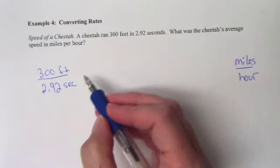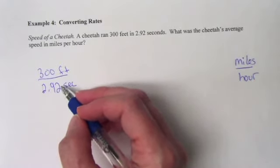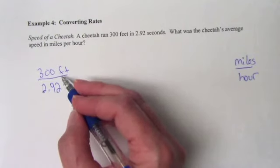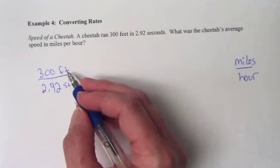First, we have to get rid of either the feet or the seconds. So we either start with time or distance. We'll start with distance first. We'll get distance over to miles and then we'll worry about the hours.